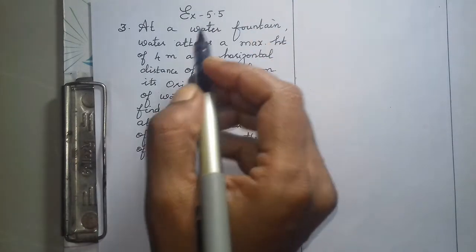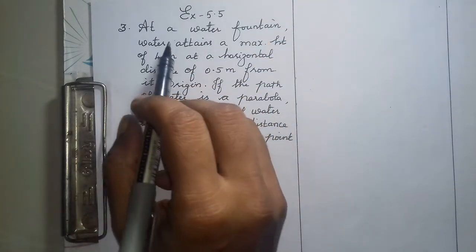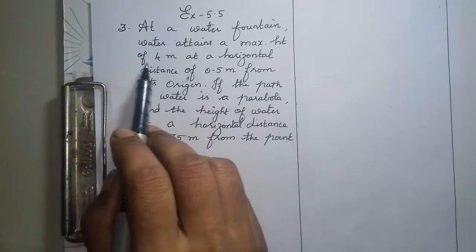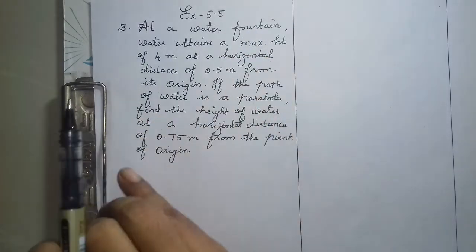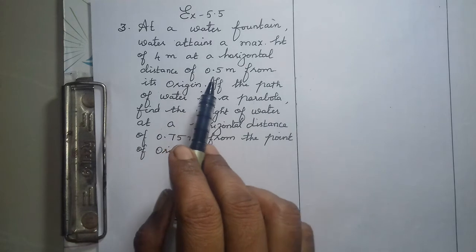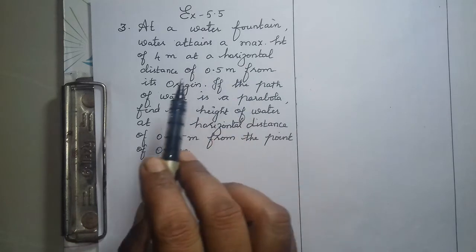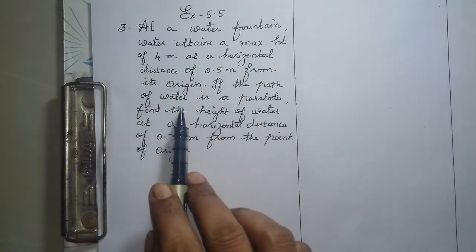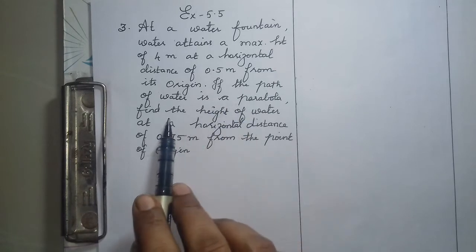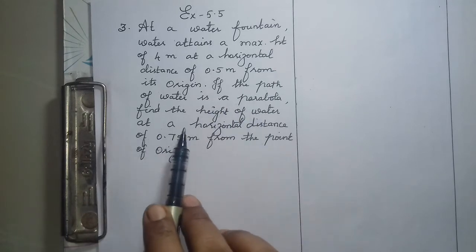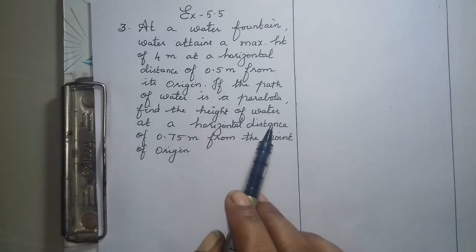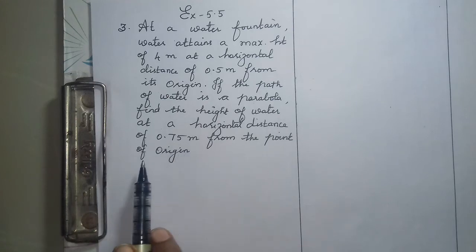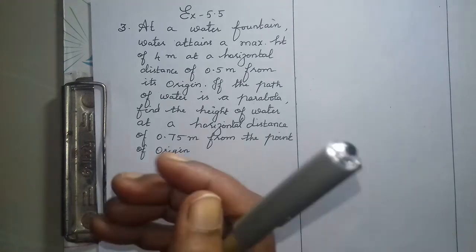Exercise 5.5, third sum. At a water fountain, water attains a maximum height of 4 meters at a horizontal distance of 0.5 meters from its origin. If the path of water is a parabola, find the height of water at a horizontal distance of 0.75 meters from the point of origin.